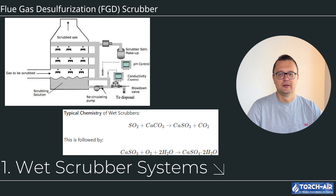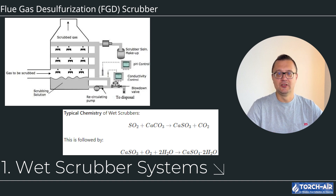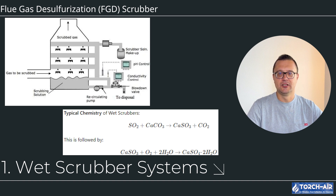Wet Scrubber Systems: The wet scrubber is the most common type of FGD system and uses a liquid, usually water mixed with an alkaline reagent such as limestone (CaCO3) or lime (CaO), to capture and neutralize SO2 in the gas stream. The flue gas containing SO2 enters the scrubber through the gas inlet. As the gas moves upward in the absorption section, it comes into contact with the scrubbing liquid sprayed from nozzles, initiating a chemical reaction that converts the sulfur dioxide into a liquid byproduct.